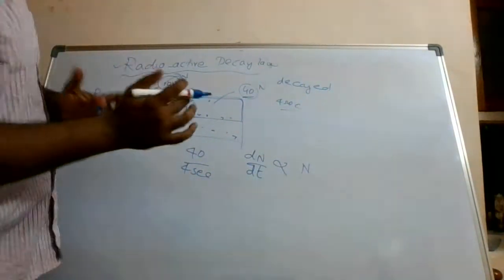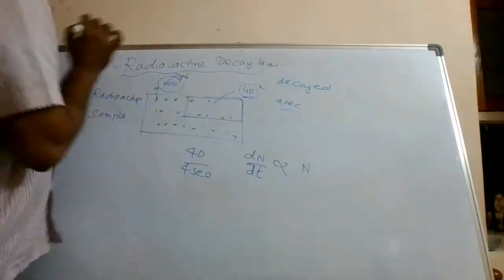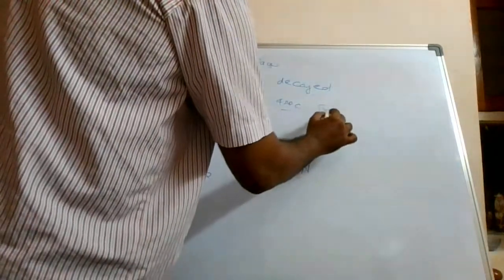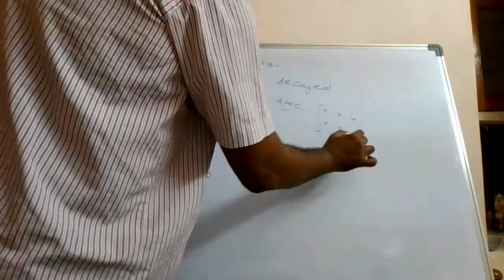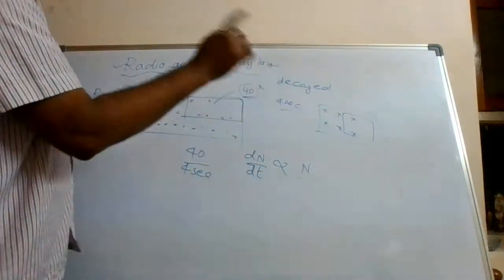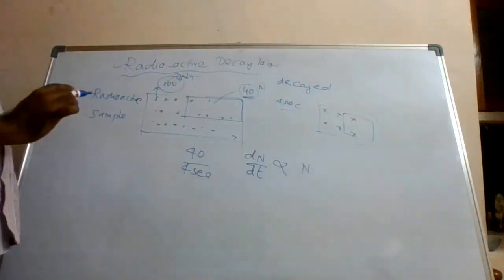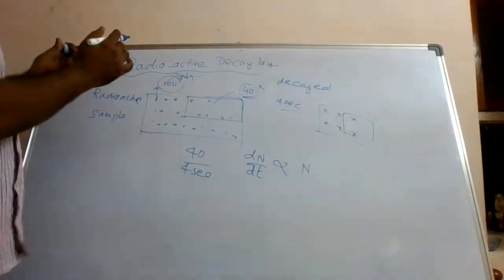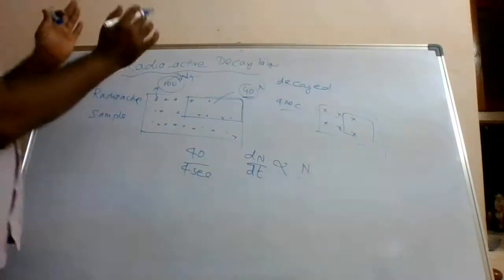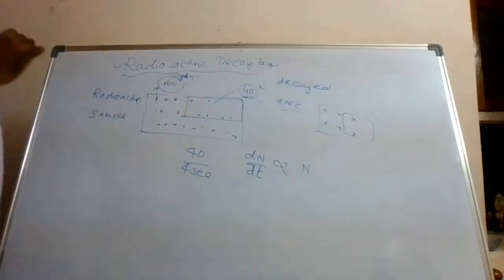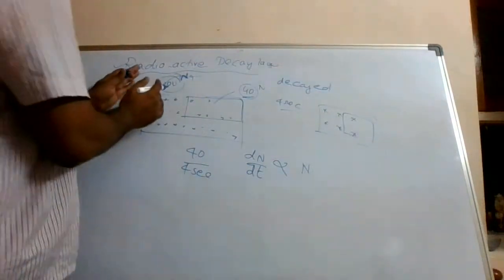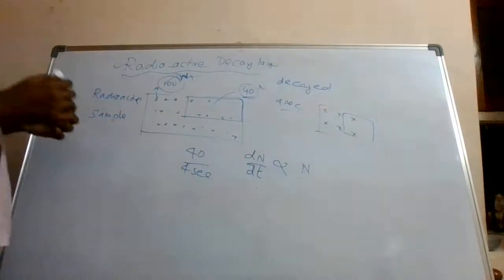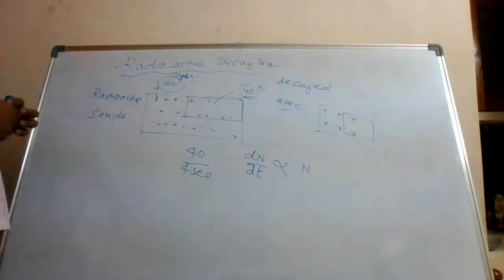At a particular instant of time there are N samples. Initially there could have been 1000 or 10,000 — at a particular instant of time let us say N nuclei are there, out of which some part is getting decayed. So dN/dt is proportional to N.